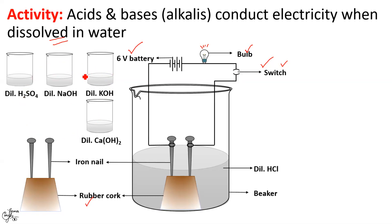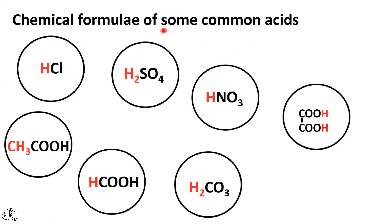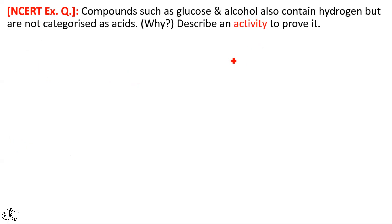We repeat the same activity with dilute sulfuric acid, sodium hydroxide, potassium hydroxide, and calcium hydroxide solution. In all these activities, on turning on the switch the bulb glows, illustrating that electric current passes through all these solutions of acids and bases. The current is carried by the movement of hydrogen ions and the corresponding anion in case of acids, and by hydroxide ions and the corresponding cation in case of bases.